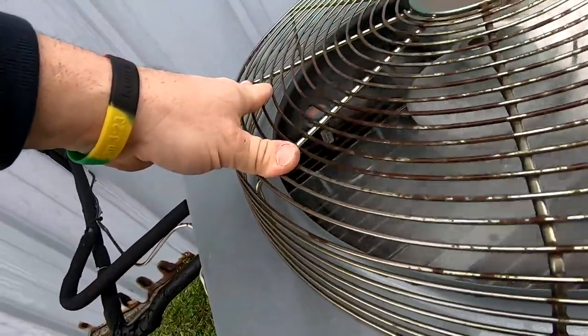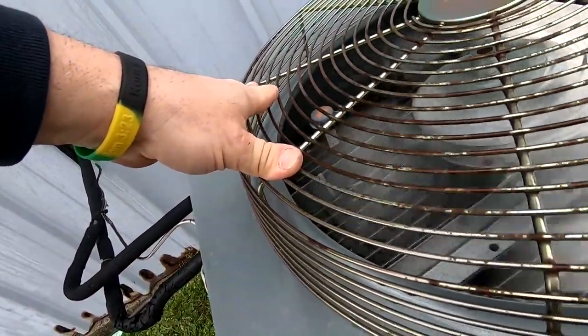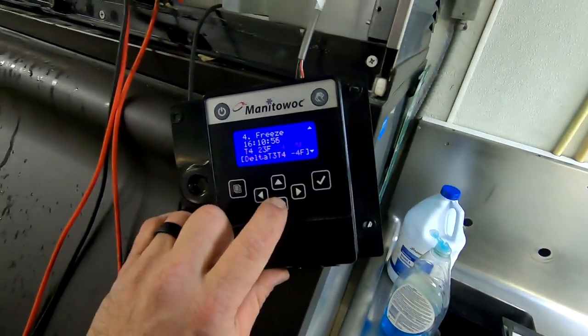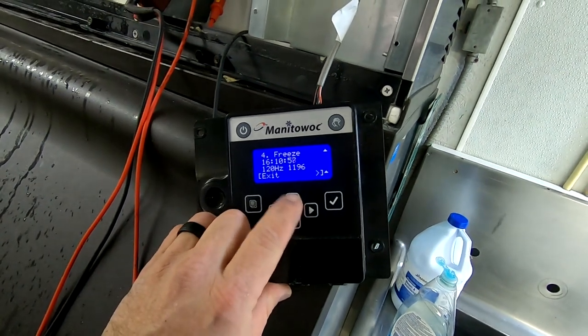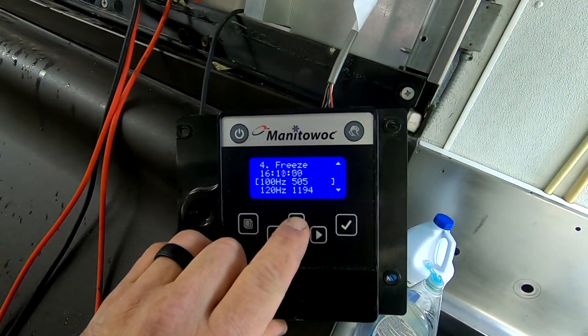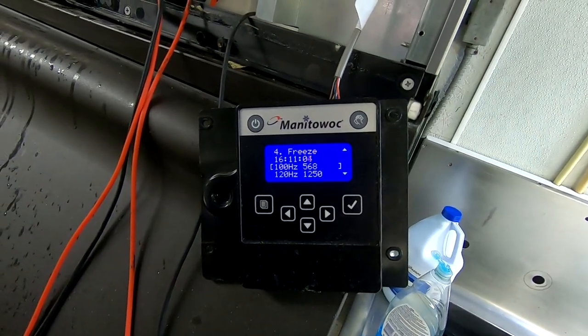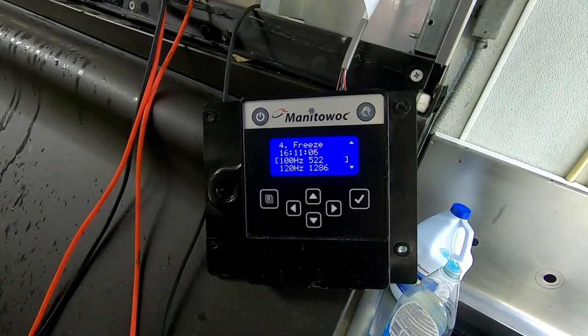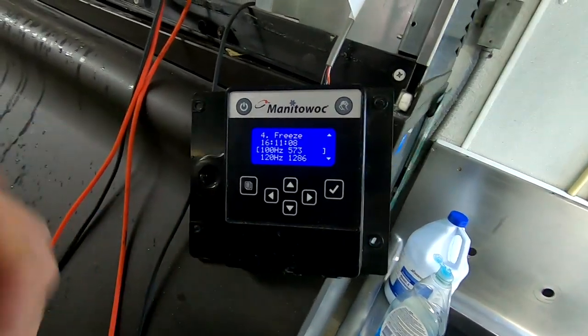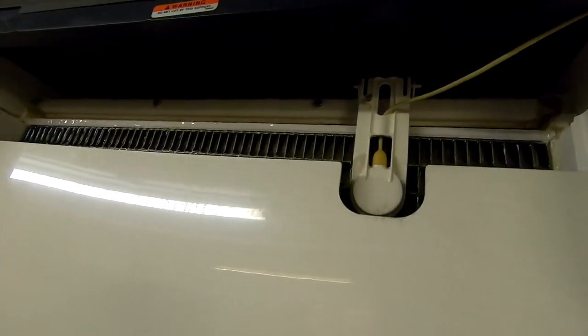Alright, our condenser's out here. Feel some heat on it. Take a look at our coil. It looks fairly clean. Coming in hot, condensing into liquid, going back on the small one. Got your headmaster control right there. It's set up for 225, it looks like.